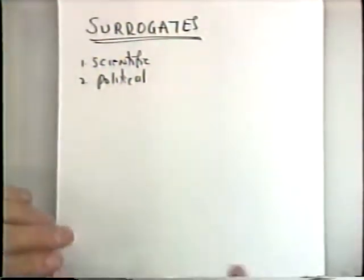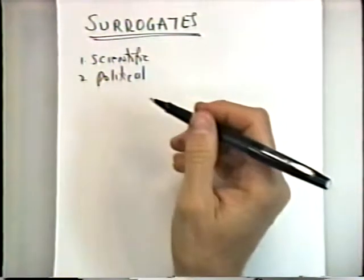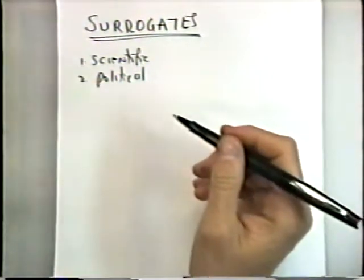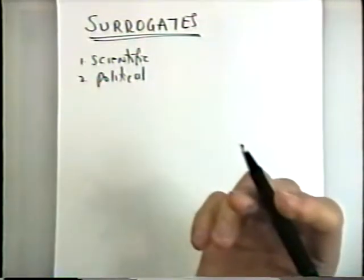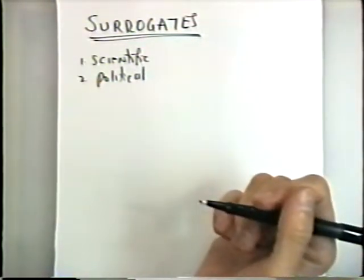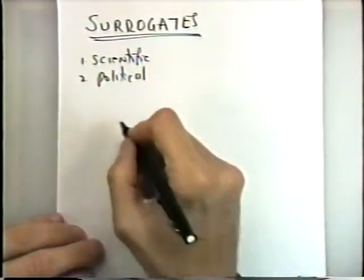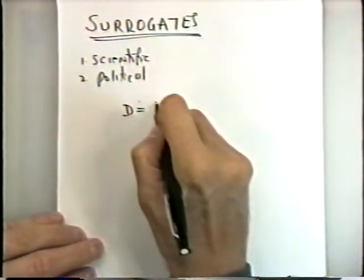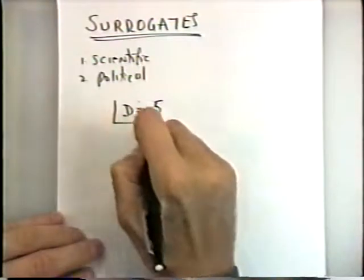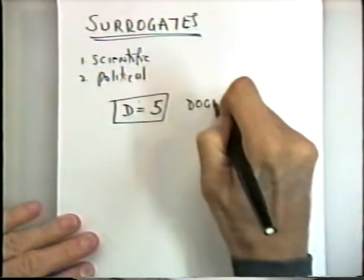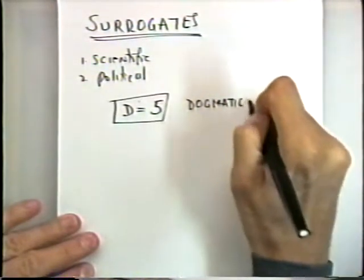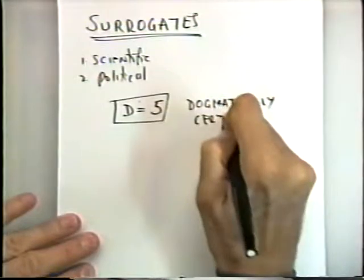In the beginning—which in this case means 1970, when the first chaos analysis was published since Poincaré—people found attractors, for example, of dimension 5, and said they had chaotic systems. And they just knew they were right.